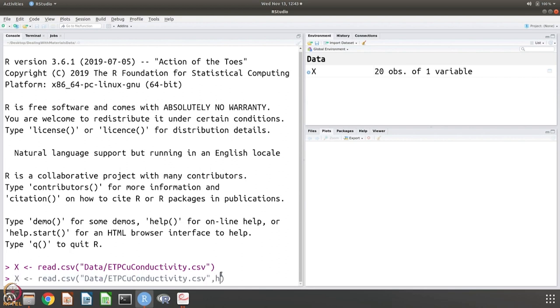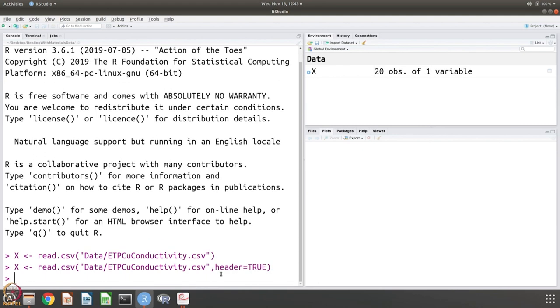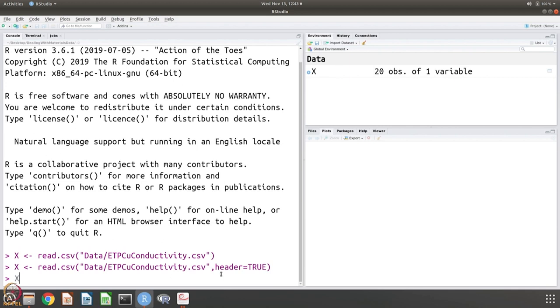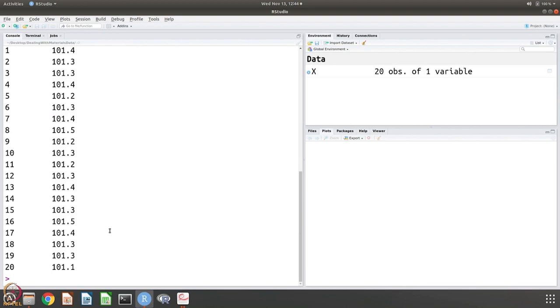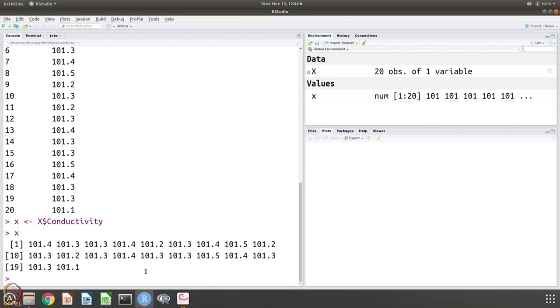So it has a header, so we say header is true. So let us say x and it gives you this and we have looked at this data in little bit of detail in the last session. So what we want to do, let us just store the conductivity data in this small x. These are all just numerical values, so x now has just these numbers.